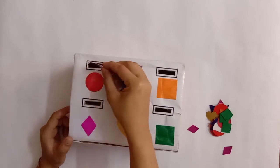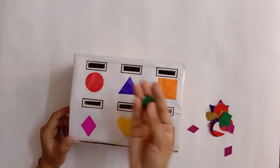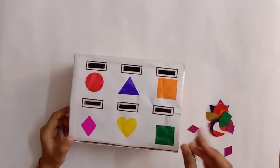Now the next shape is a green square. So he will see there are two squares but which one is green square. So here it is, so he will put this green square inside it.